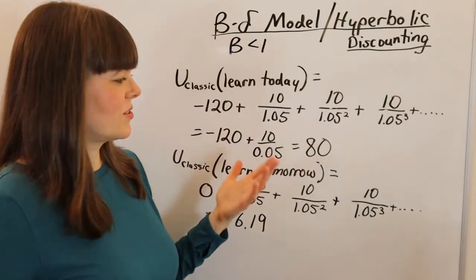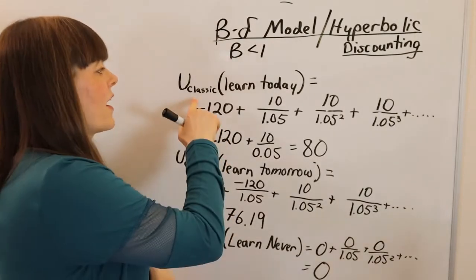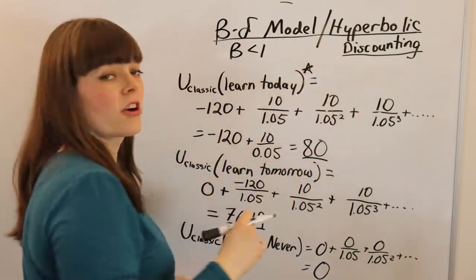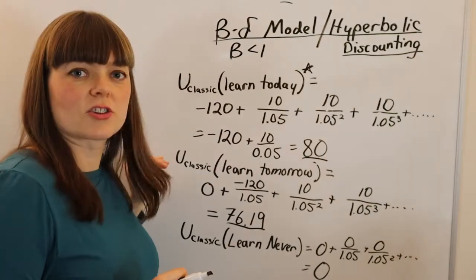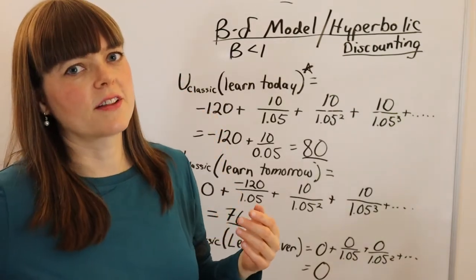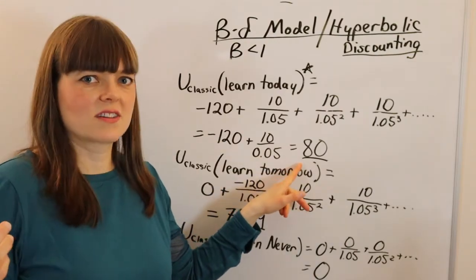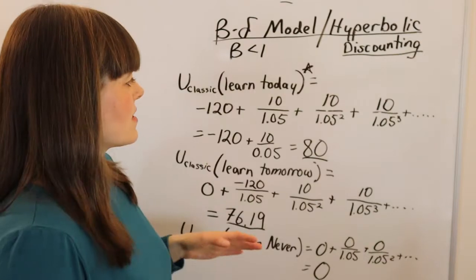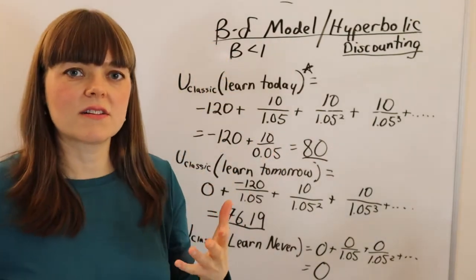The utility if you learn them never is zero. So if we're choosing between those three options as a classic discounter — 80, 76, and zero — it's very clear that the best option is to learn the Excel tricks today. But with procrastination, we know that people often choose to learn it tomorrow, thinking they'll actually follow through. But they get to tomorrow, do the same optimization problem, put it off till the next day, and end up never actually learning the Excel tricks — even though they could have gotten a lot of utility had they just gotten it over with. That behavior is common and we want to model it, but it's actually impossible to get that situation with classic discounting. You actually need the beta in the beta-delta model to make that happen.